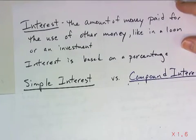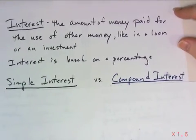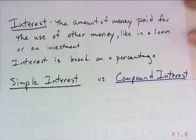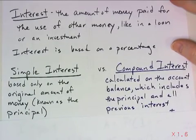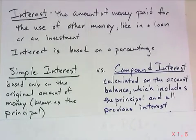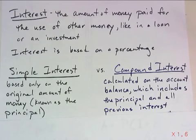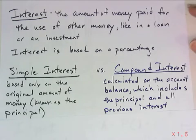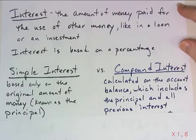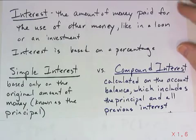There's both simple and compound interest. Let me slide that over so you can see both of them. Simple interest is based only on the original amount of money — that's called the principal. Compound interest, on the other hand, is based off of the account balance, which is going to include that original investment plus all of the previous interest that's already been accumulated.